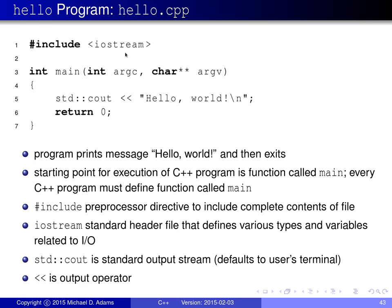These seven lines of code — and the numbers in the left margin are not actually part of the source code listing, they're just there for convenience — make up the program. When this program is executed, it simply prints the message "Hello World" and then terminates. Depending on the operating system and how the program is run, the message might appear on the user's console, terminal, or be written to a file.